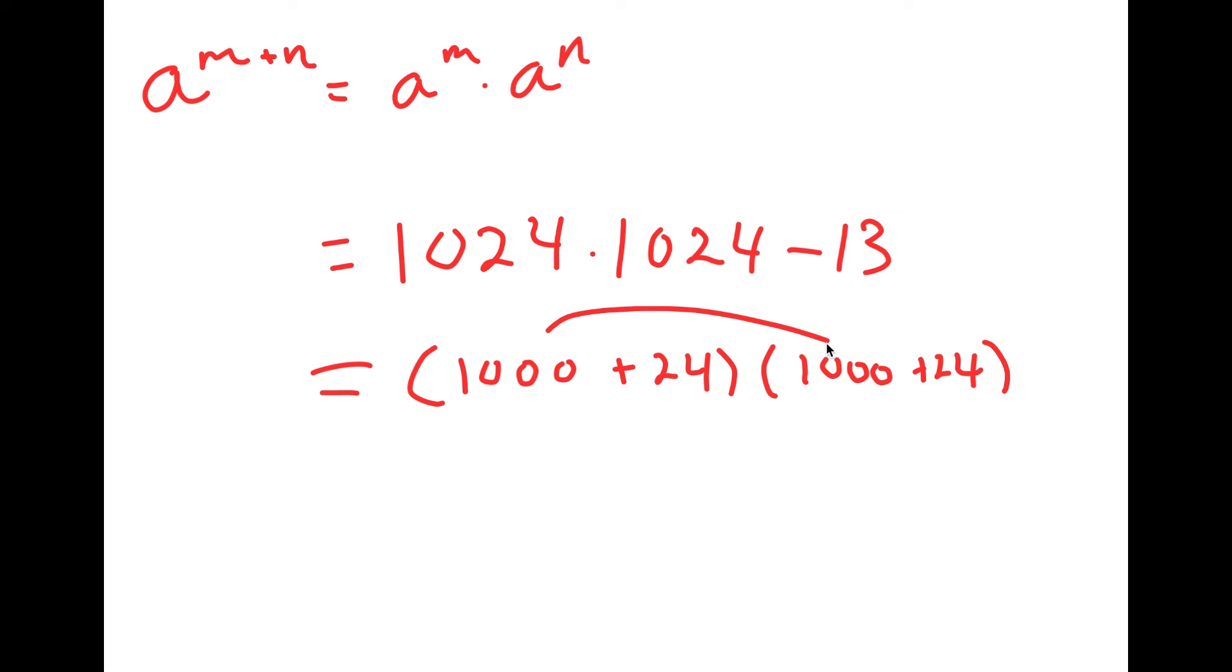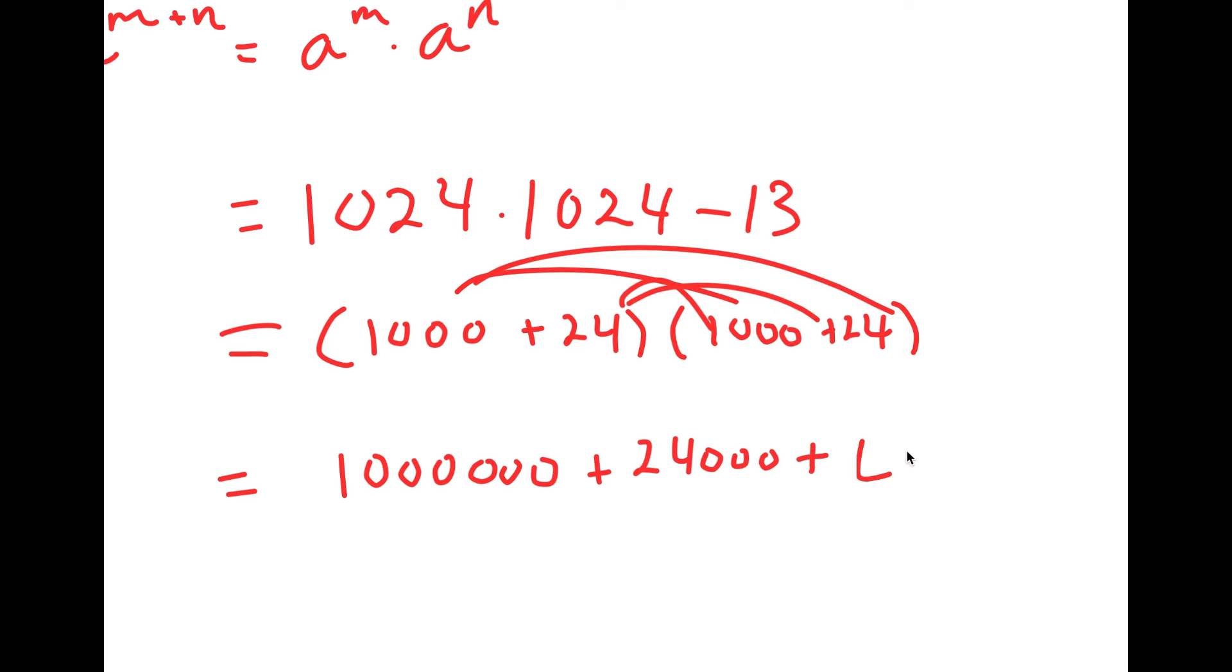Now I can distribute the 1000. I get 1000 times 1000, which is 1 million plus 1000 times 24, which is 24,000. Plus now I'm going to distribute the 24. I get 24 times 1000, which is again 24,000. And finally, I get 24 times 24, which is 576.